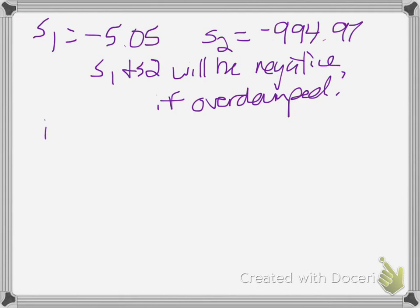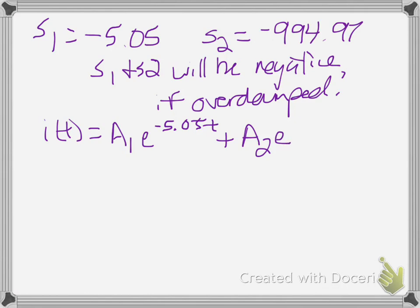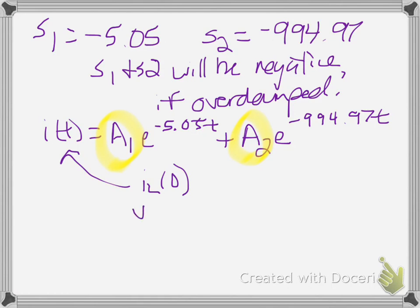So my general solutions for current I will be A1·e^(−5.05·t) plus A2·e^(−994.97·t). All I would need to do now is solve for the constants A1 and A2. That requires finding our initial conditions — I need to know the current through the inductor at time zero, plug that into this equation to get one constant, and also know the derivative of current at time zero with respect to time to get the second constant A2. We will practice that next time.